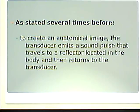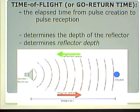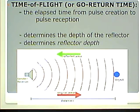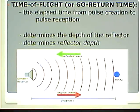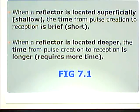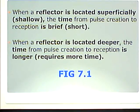As stated several times before, to create an anatomical image, the transducer emits a sound pulse which bounces off a reflector and comes back to the transducer — voilà, image. The time of flight, or go-return time, is the elapsed time from pulse creation to pulse reception. It determines the depth of a reflector. When a reflector is shallow, that time is short; when a reflector is deeper, the time is longer — it requires more time.